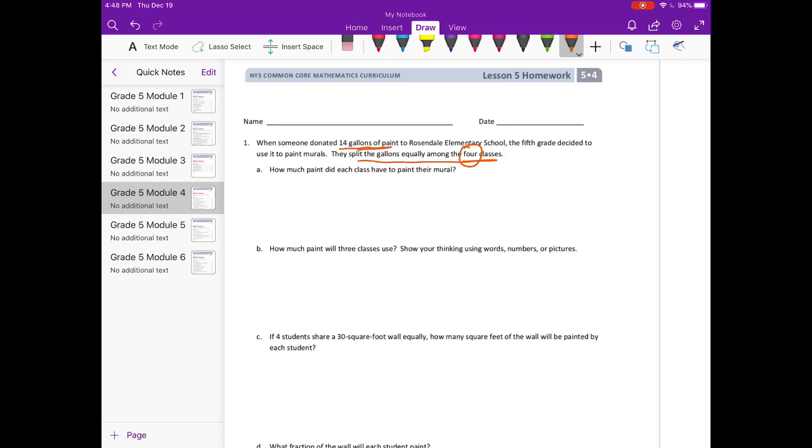I'm going to draw my tape diagram. The whole thing represents 14 gallons and it's split equally four ways. Now we know 14 divided by 4 is equal to 14 fourths. Let's figure out what 14 fourths is equal to. Four can't go into one, but four goes into 14 three times. Three times four is 12. We subtract and get two, so we have three and two fourths.